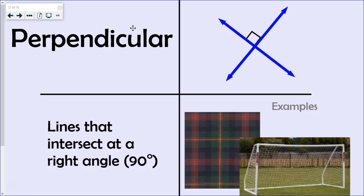Let's talk about perpendicular lines. Perpendicular lines are lines that intersect at a right angle. Take a look at this soccer goal. If you look at this top goal post and the right side goal post, it actually forms a right angle. There is an example of perpendicular lines.